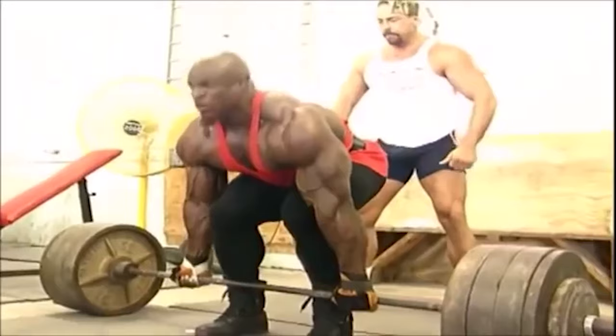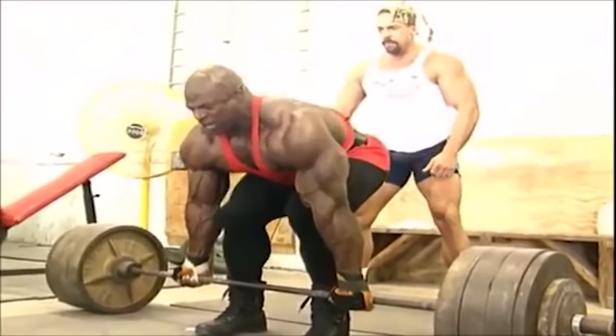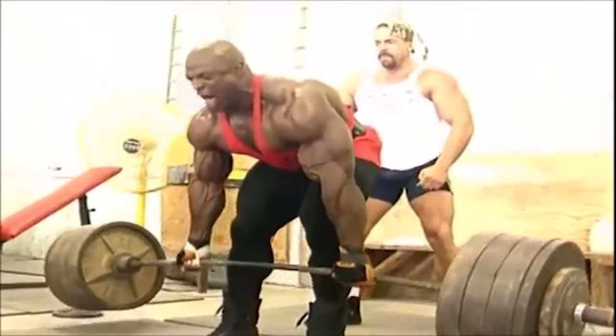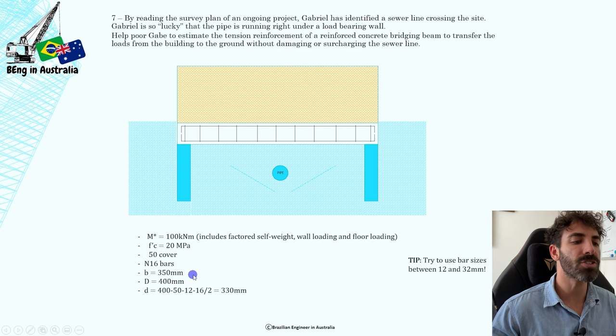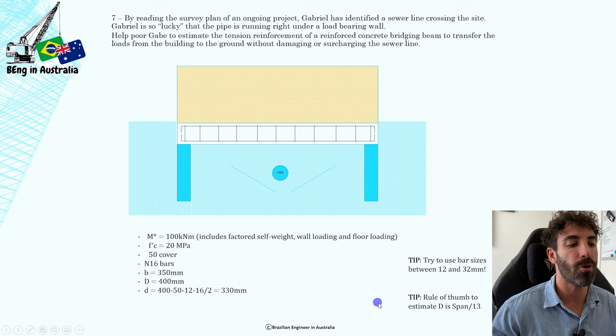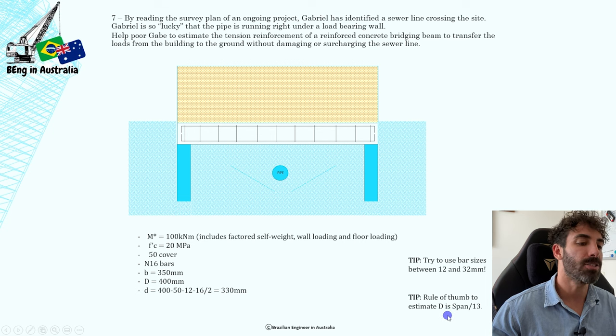The cross-section dimensions are given to us, but if you need to estimate, a good rule of thumb for the depth of a simply supported reinforced concrete beam is the span divided by 13.